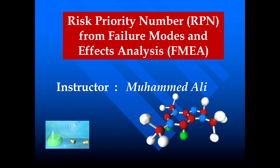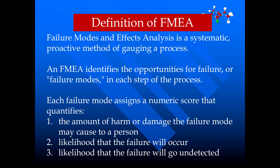In this tutorial, I am going to talk about the Risk Priority Number from the Failure Modes and Effect Analysis. Failure Modes and Effect Analysis is a systematic proactive method for evaluating a process. An FMEA identifies the opportunities for failure, or failure modes, in each step of the process. Each failure mode is assigned a numeric score that quantifies the amount of harm or damage that failure mode may cause to a person or to a patient.